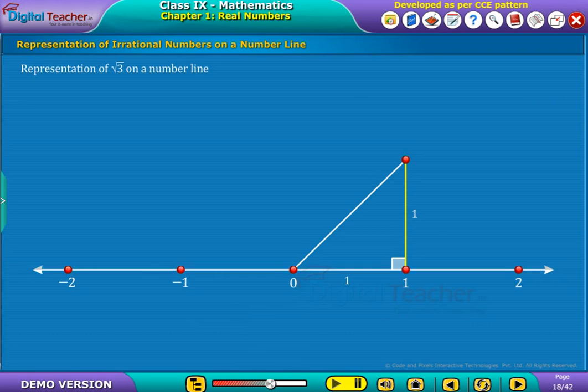Let us mark the points of the right-angle triangle as OAB. Now, to find the distance between O and A, we use Pythagoras Theorem.